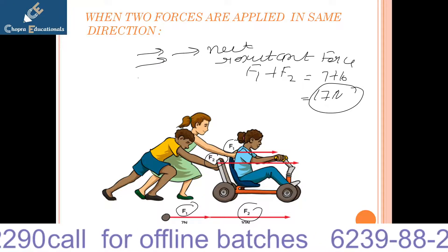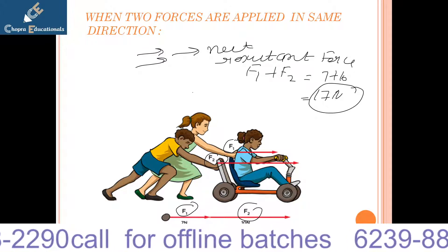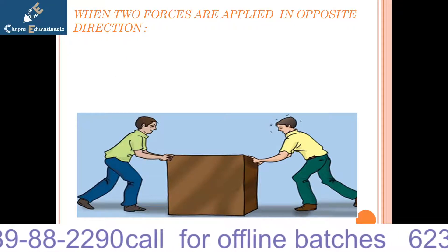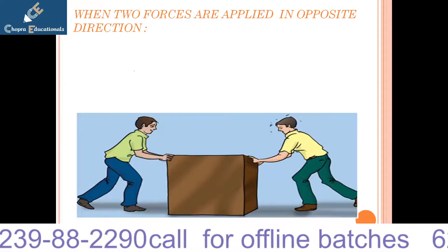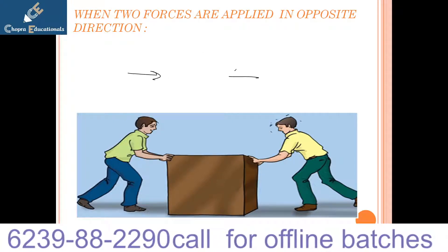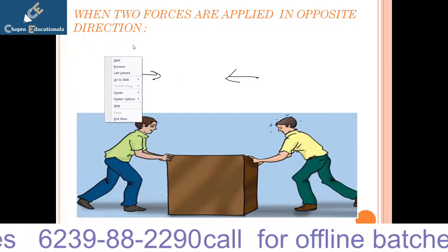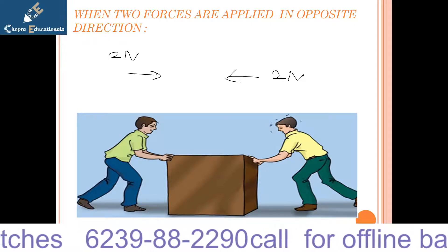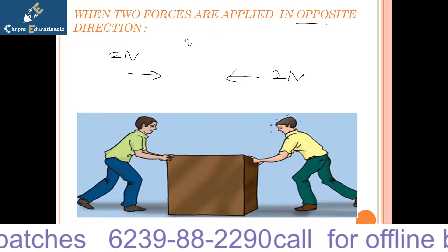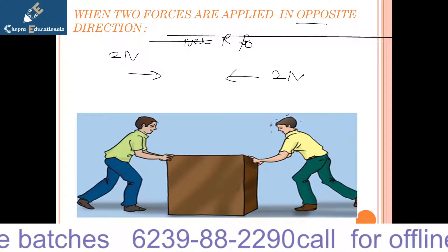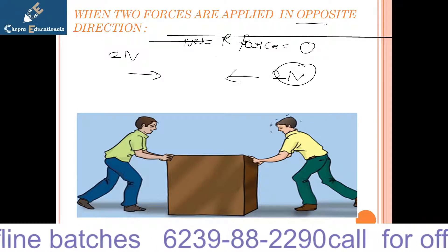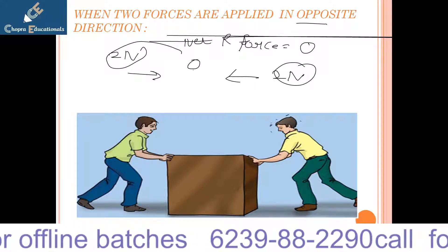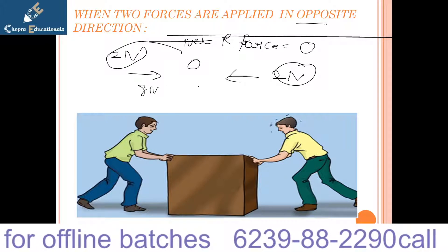The net resultant force is 17 Newtons when forces are applied in the same direction. Now, when two forces are applied in the opposite direction: if two equal forces of 2 Newtons are applied on both sides, the net resultant force is zero because the same force is experienced on both sides.